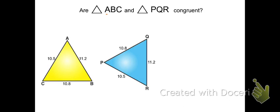So if we look at side AB. AB is 11.2. Is PQ also 11.2? No, it's 10.8. So already this isn't working out.